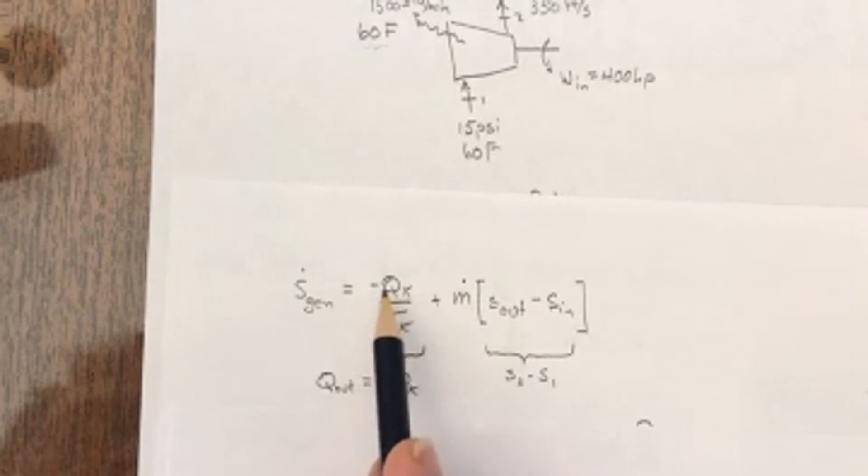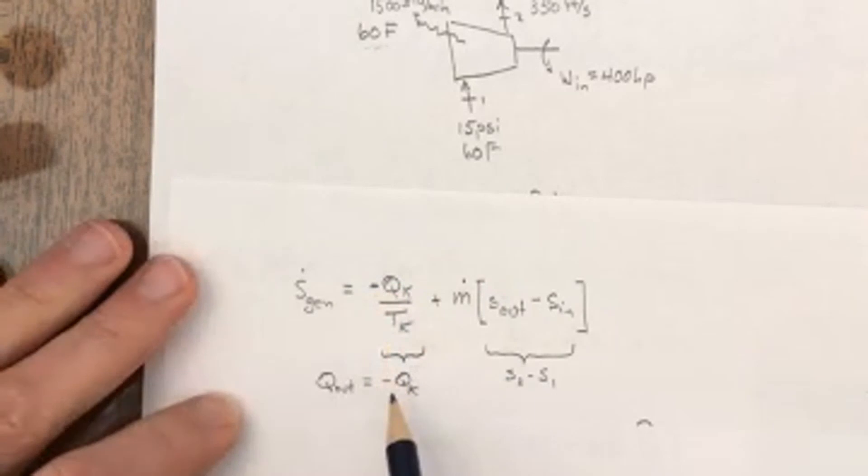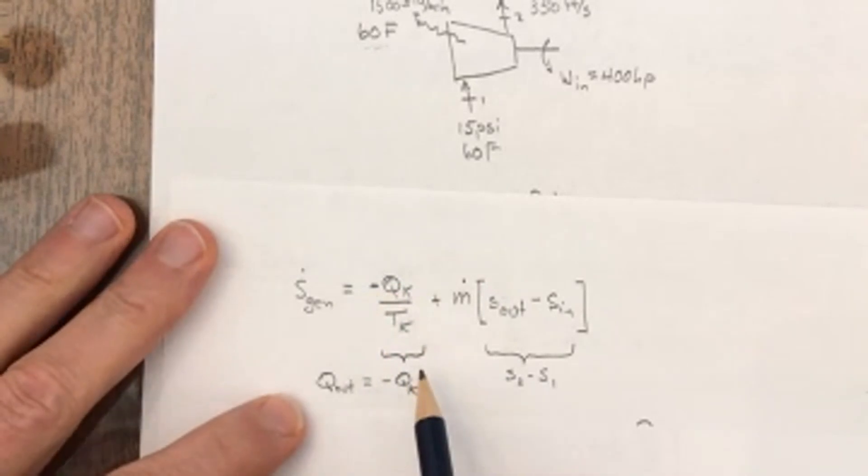So when I substitute in, this negative sign came from the equation, but because this is an outgoing heat transfer, it's going to flip that sign again.